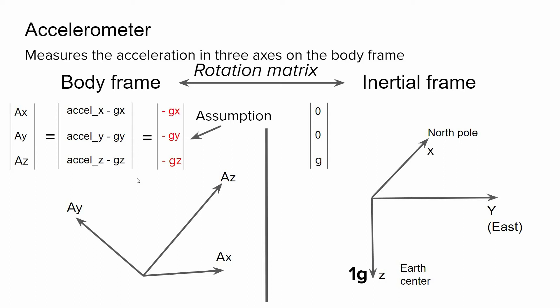But if we assume that there is no acceleration, we can imply that accelerometer readings possess the negative values of the projection of the gravity force. So we have minus gx, minus gy, and minus gz.